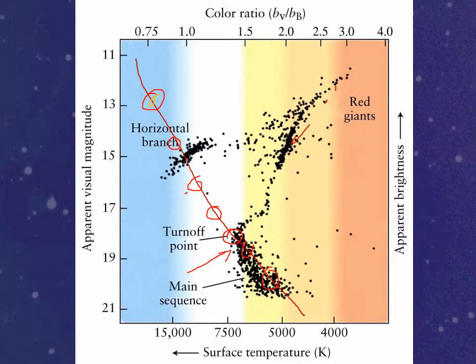In astronomy, we call the spot right there on the HR diagram where stars are just turning off the main sequence the turnoff point. You can actually figure out the age of a star cluster by finding the turnoff point. For this particular star cluster, you find the temperature of those stars, which gives you the spectral type, which lets you figure out the mass of those stars. From the equation, you can figure out how old those stars that are just now dying might be.